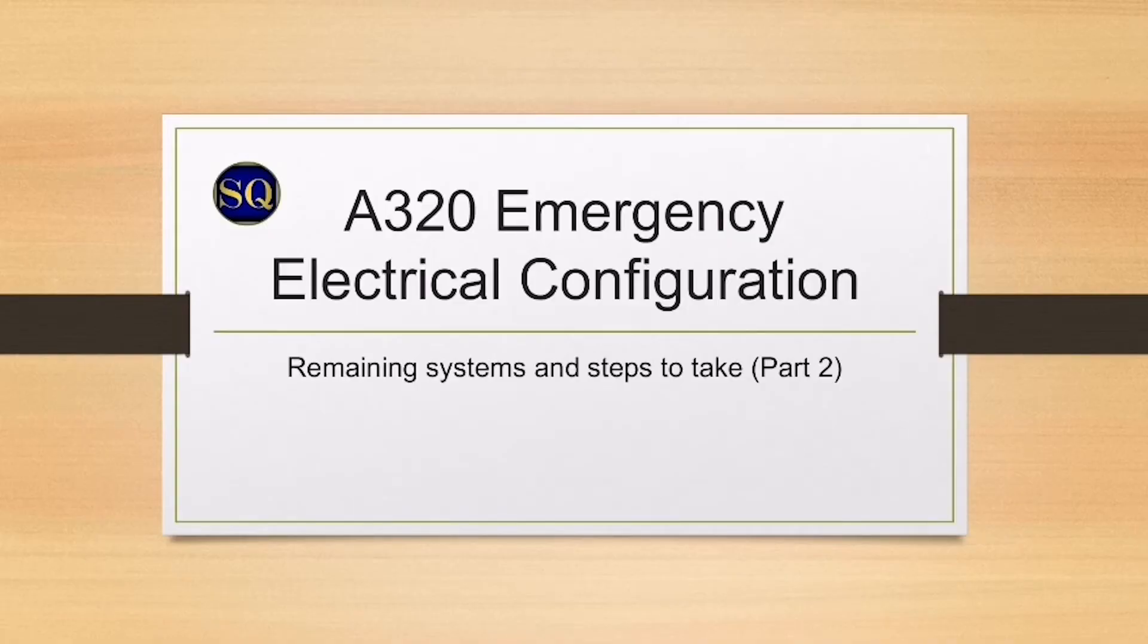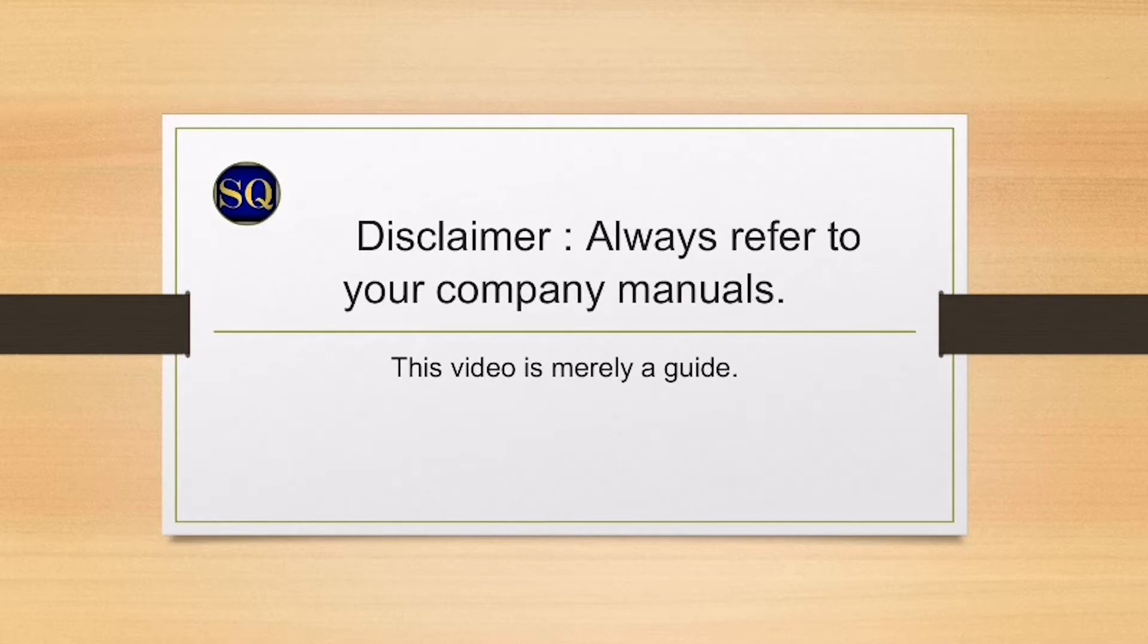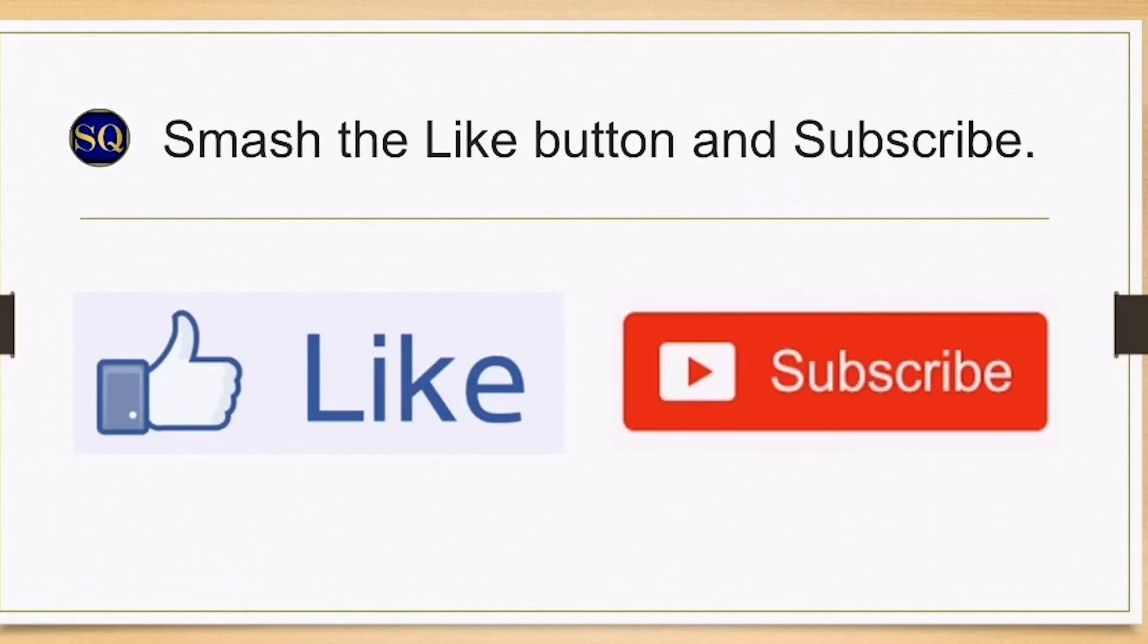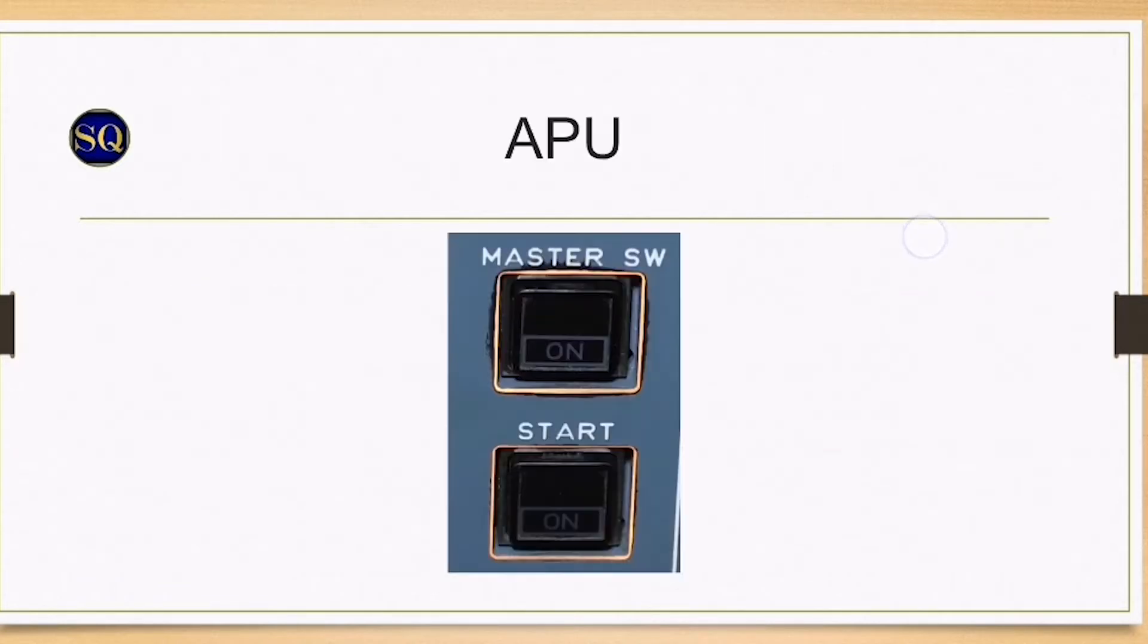A320 emergency electrical configuration remaining systems and steps to take part two. Disclaimer: always refer to your company manuals. This video is merely a guide. Before we start, smash the like button and subscribe if you want to see more of these videos. Let's continue part 2. APU: if both AC bus 1 and 2 fail, the probability of a successful APU generation connection is low.